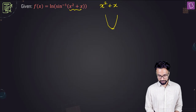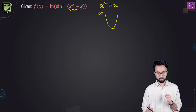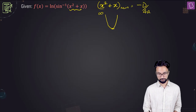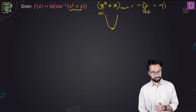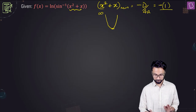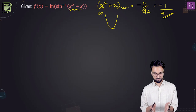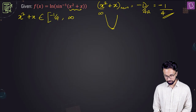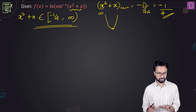The minimum value of this quadratic is given by minus D by 4a, which equals minus of b squared minus 4ac, all over 4a. Here b is 1 and c is 0, so the numerator is just minus 1 and the denominator is 4, giving minus 1 by 4. So x squared plus x is between minus 1 by 4 and infinity.